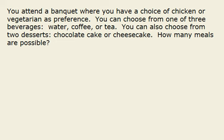You're attending a banquet where you have a choice of either chicken or vegetarian as your preference, and you can choose from one of three beverages: water, coffee, or tea. You can choose from two different desserts, chocolate cake or cheesecake. We want to know how many meals are possible at the banquet.